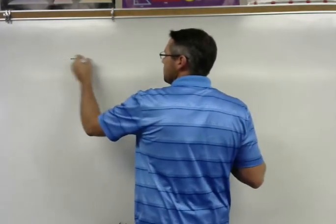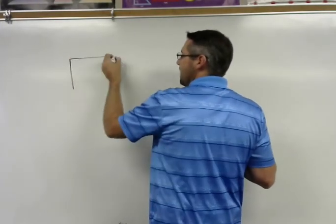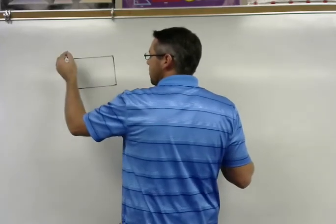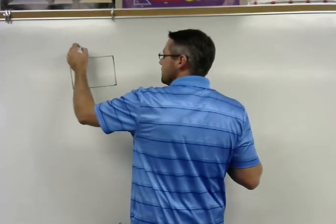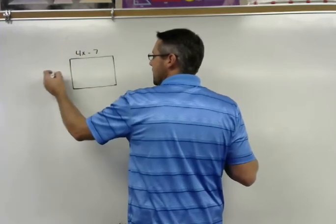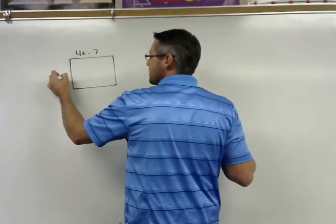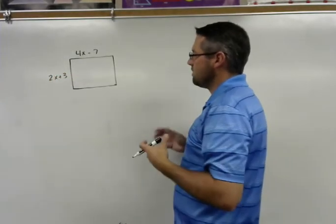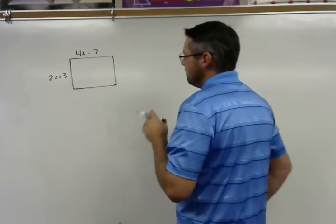So I'm just going to give you a quick example of how to find the area of a rectangle when you have polynomials. So let's say that this length here is 4x minus 7, and this length is 2x plus 3, for example, and I want to find the area and the perimeter of this rectangle.